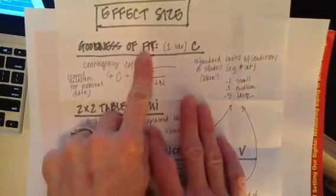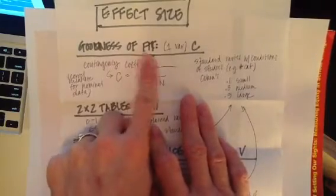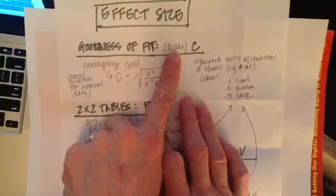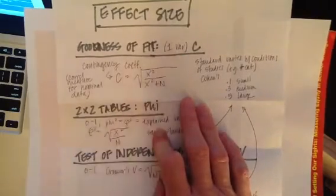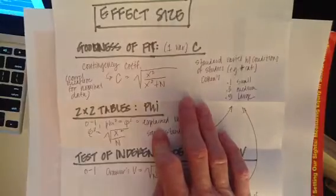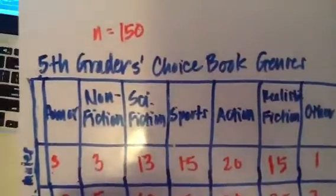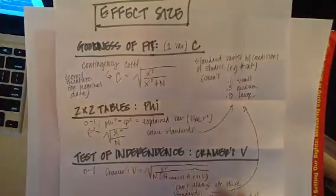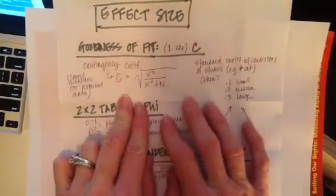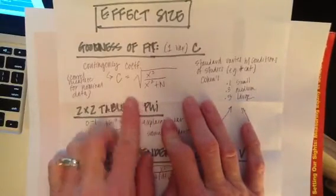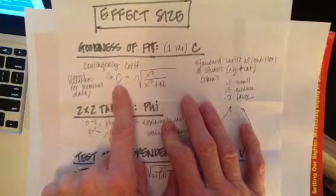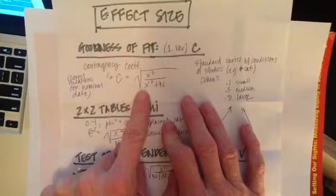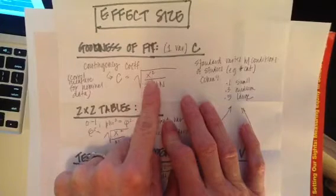So goodness of fit, remember that is the kind of analysis you use if you have one variable, so that's just one row of data broken into multiple categories. In our situation earlier, we were looking at students, total students by what kind of genre they chose for their independent book choice. In this situation, you're going to be calculating the contingency coefficient, or c, and that's essentially a correlation measure for nominal data. It's the square root of your chi-square divided by chi-square plus n.